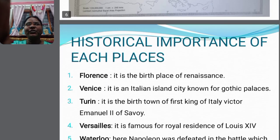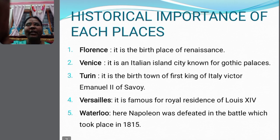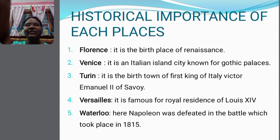Now let's move on to the historical importance of each place. Florence is the birthplace of the Renaissance in Italy. Venice is an Italian island city known for its Gothic palaces. Turin is the birth town of the first King of Italy, Victor Emmanuel II of Savoy. Versailles is famous for being the royal residence of Louis XIV in France.